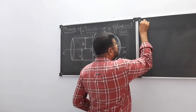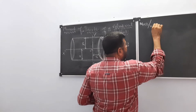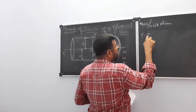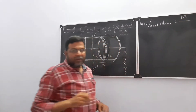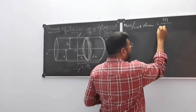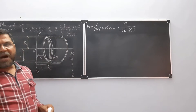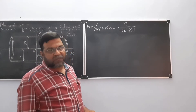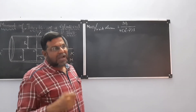Now we are going to find mass per unit volume. You know density is equal to mass divided by volume. Mass per unit volume is nothing but M divided by the volume of a cylinder, which is π r² h. But here we have an inner radius and an outer radius, therefore we write this as M divided by π(R² − r²)L. That is the mass per unit volume.